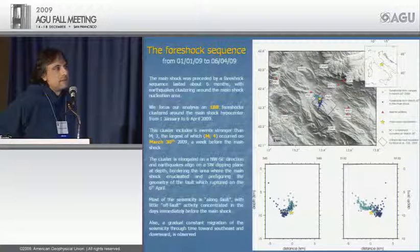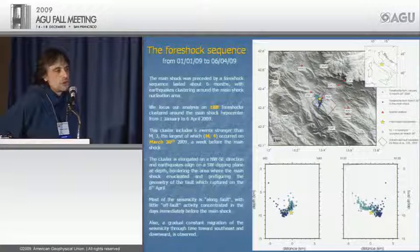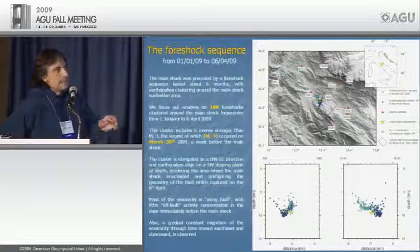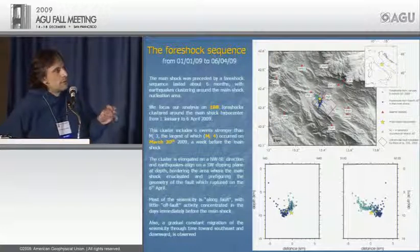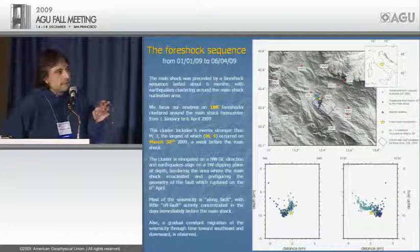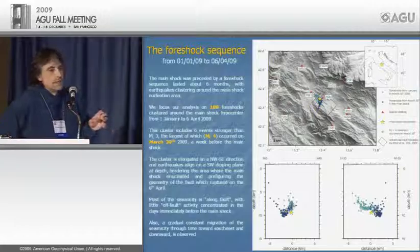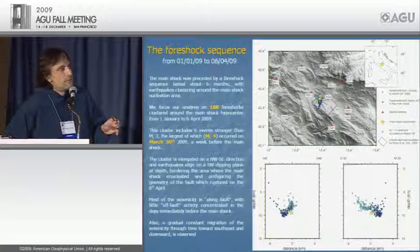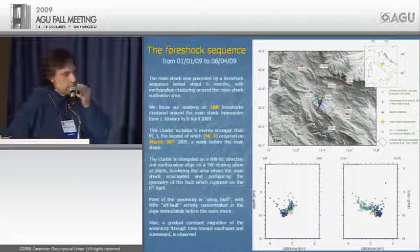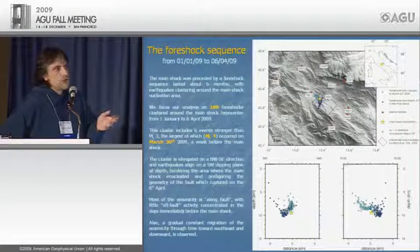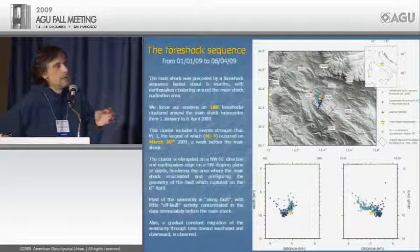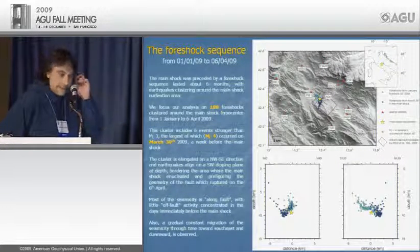We focus our analysis on 188 foreshocks before January that are well located. On these foreshocks we measure two seismological quantities: the ratio between compressional and shear wave velocity (VP/VS), and shear wave splitting. These quantities are highly informative about the elastic properties of the rocks traveled by seismic waves and their variation over time — and therefore about how stress leading to fault failure builds up.